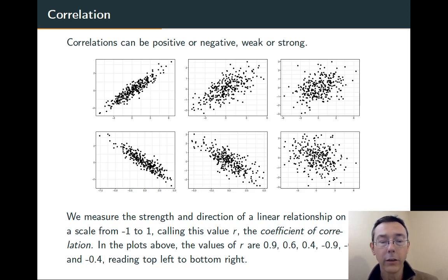We measure correlation using what we call the coefficient of correlation. We give it a number between negative 1 and 1. And the closer you get to 0, the more cloudy the data is. So, on the far right, we have correlations of 0.4 and negative 0.4 on the top and bottom, respectively. On the far left, we have 0.9 and negative 0.9.